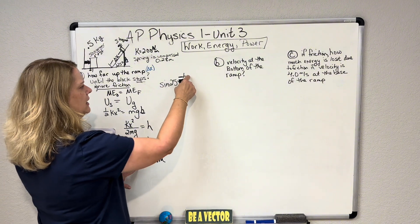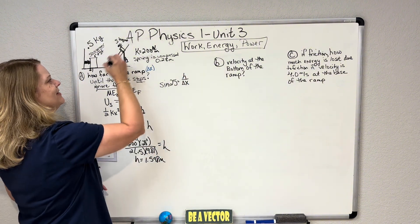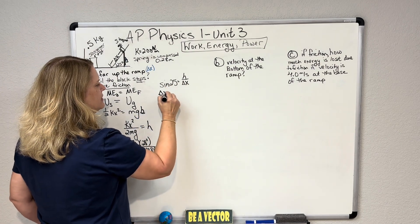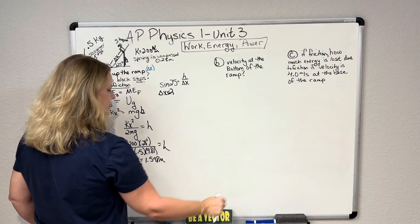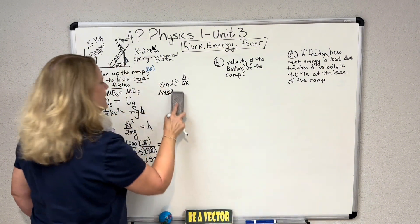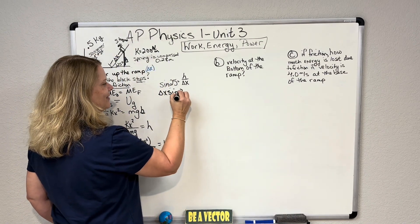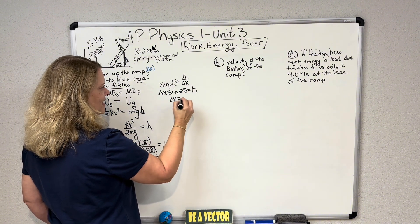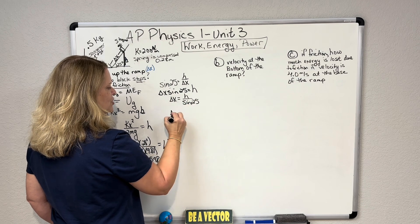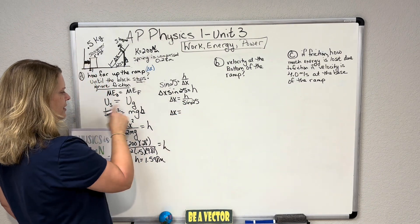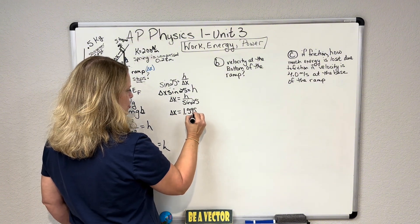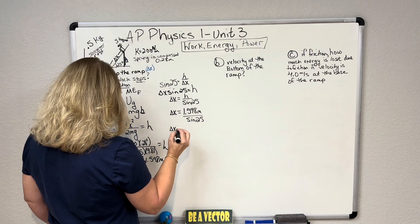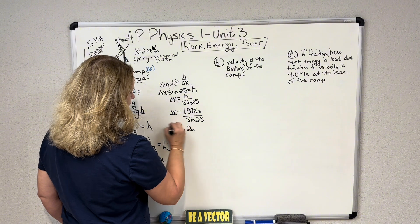Now I'm going to plug that in here to this sine equation because I really need delta x. They want the distance up the ramp, not the height off the floor. Sine of 25 equals h, which we know, and I'm actually going to solve for delta x because that's what I want, h over sine 25. We just figured out that that height from my conservation of energy formula here was 1.598 meters, and I'm dividing that by sine of 25 and I'll get a delta x up that ramp of 6.2 meters. So there's part A.